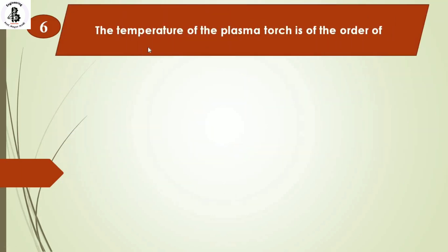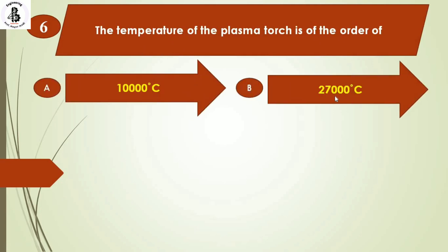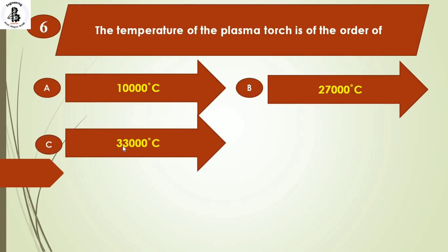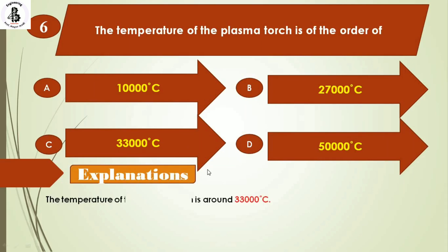The temperature of a plasma torch is of the order of: Option A: 10,000 degrees centigrade. Option B: 27,000 degrees centigrade. Option C: 33,000 degrees centigrade. Option D: 50,000 degrees centigrade. As per the specifications for a plasma torch, the temperature is around 33,000 degrees centigrade. So the right answer is option C.